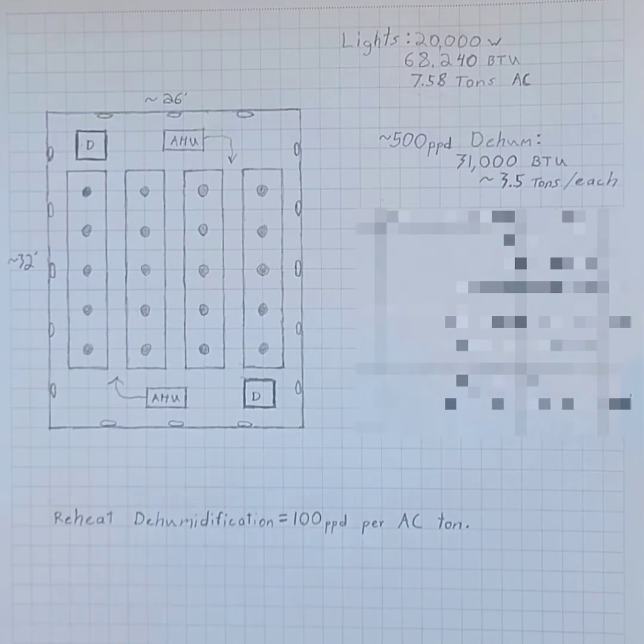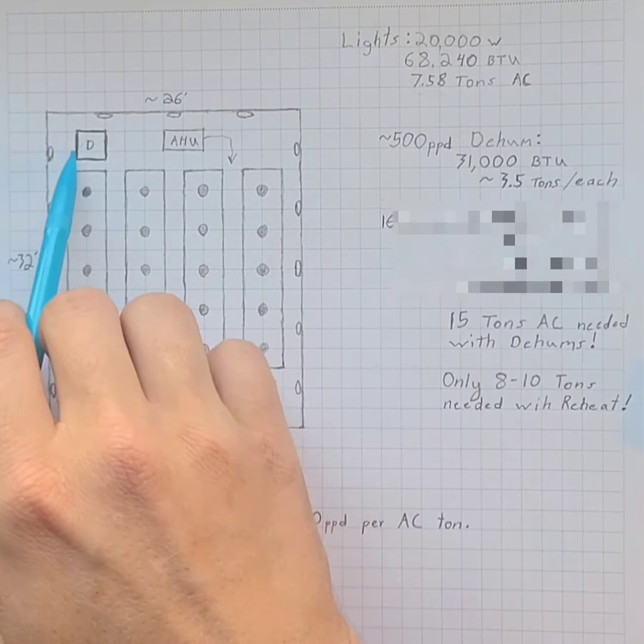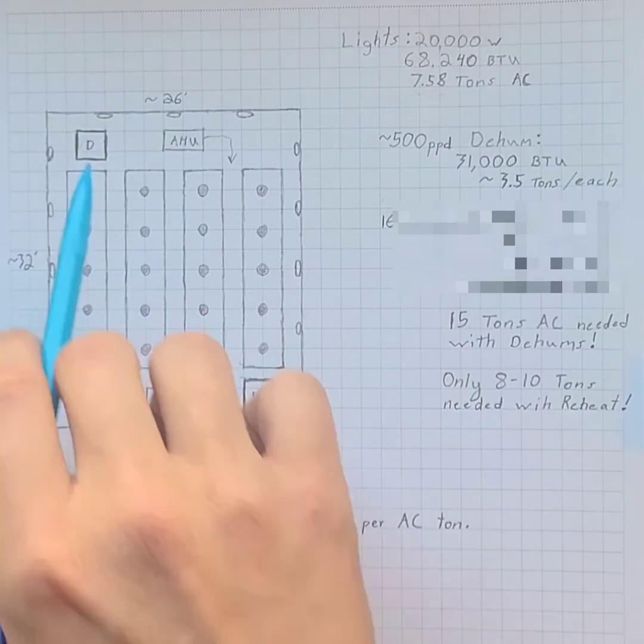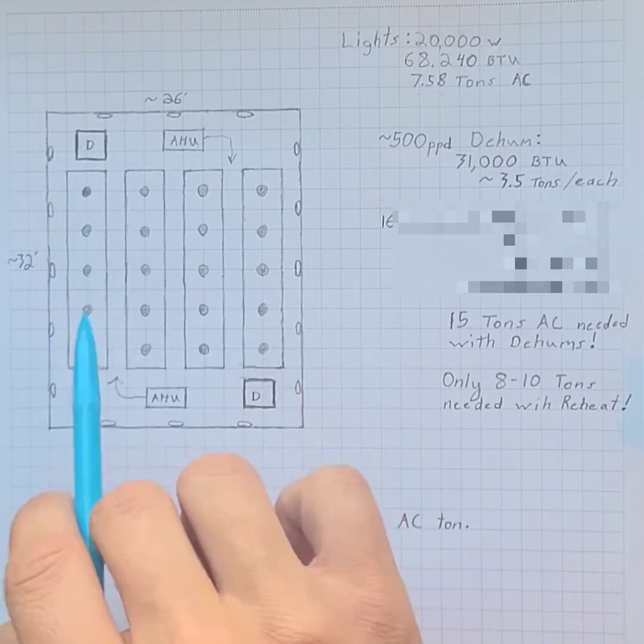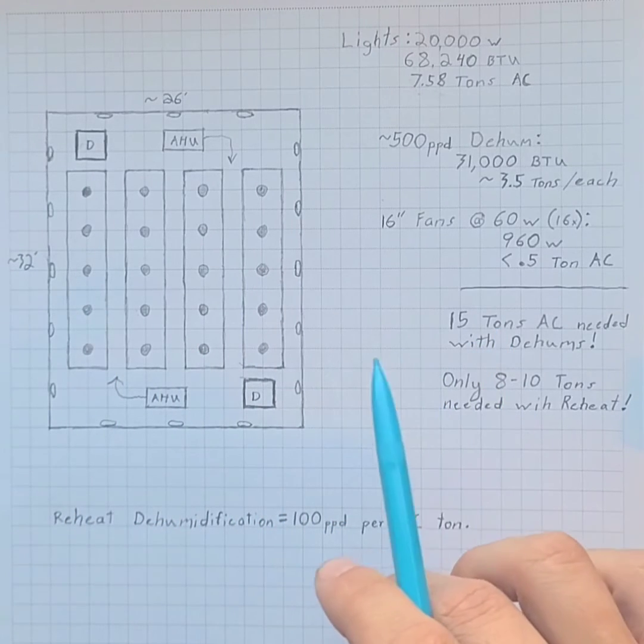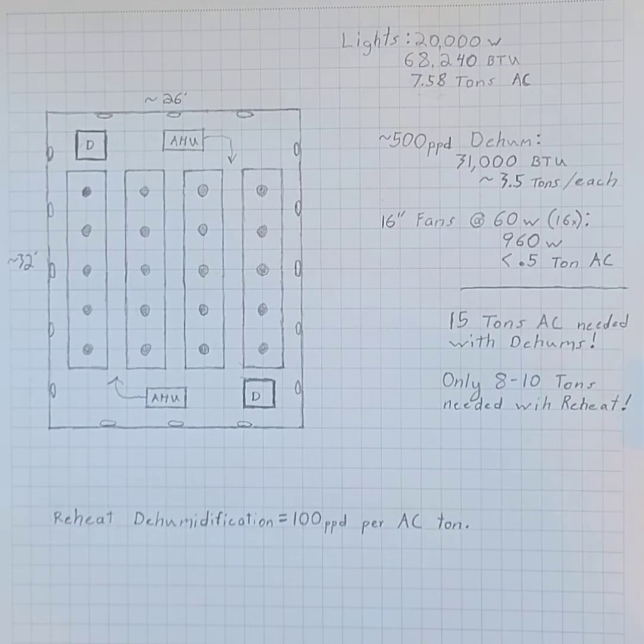The thing is, these dehumidifiers produce 31,000 BTUs each. So each one of these dehus literally needs three and a half tons of cooling just to keep it cooled. So we've got seven tons of cooling just in those two dehus in addition to the eight tons of cooling needed for the lights. So right there alone, you have 15 tons of AC needed just to keep the room under control with those two dehus.